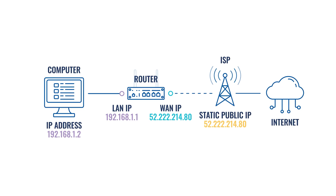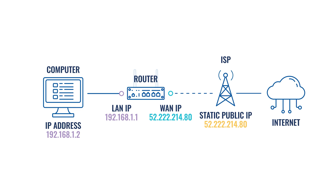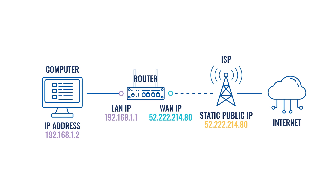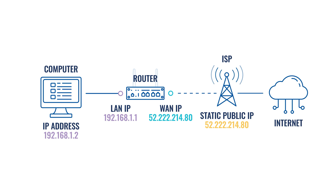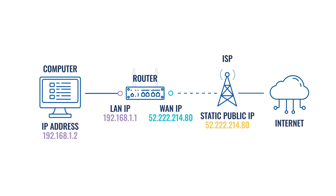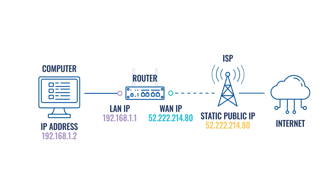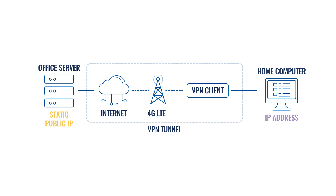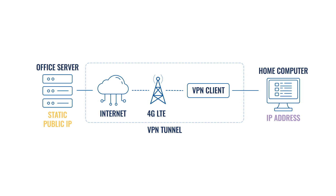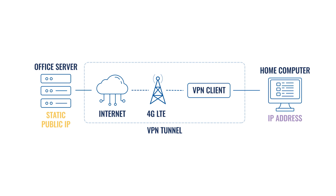A public static or dedicated IP address is assigned to a single entity, be it a user, machine, website, or server. Here we can see how the connection request moves from the client machines to the routers. Upon reaching them, a static IP address is assigned, and the Internet Service Provider keeps the same address as the request reaches the Internet. We usually use static IP when accessing devices from a distance. For example, employees work remotely and use a VPN client to connect to the office server with a static public IP.